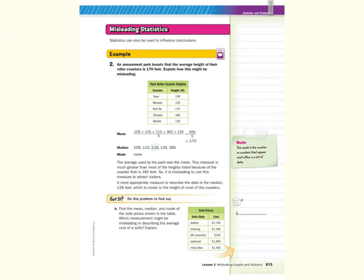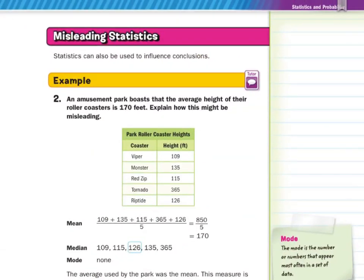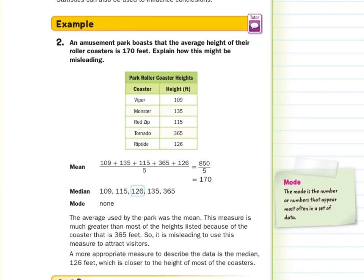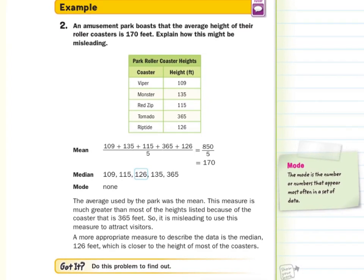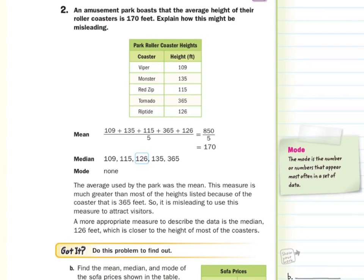On our last page now, misleading statistics. Statistics can also be used to influence conclusions. In our second guided example, an amusement park boasts that the average height of their roller coasters is 170 feet. Explain how this might be misleading. To do this we need to calculate the measures of center. We need to calculate the mean, median, and the mode.